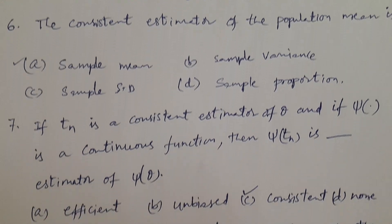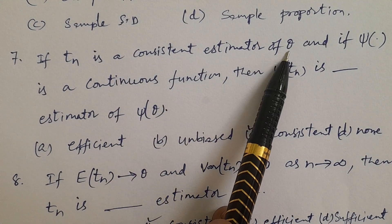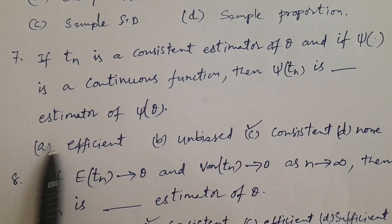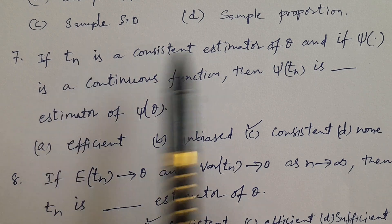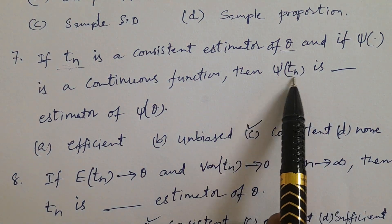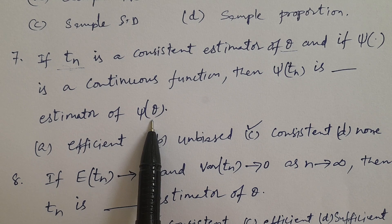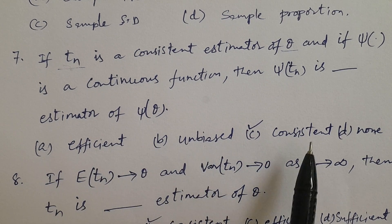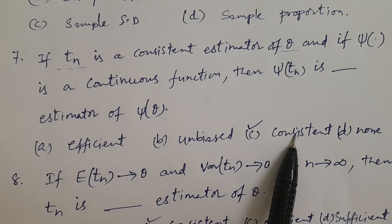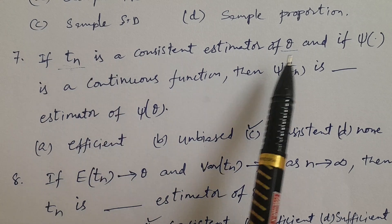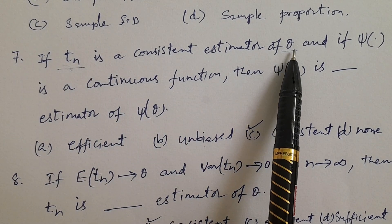Question number seven: If Tn is a consistent estimator of θ, and if ψ is a continuous function, then ψ(Tn) is a dash estimator of ψ(θ). Options: A. Efficient, B. Unbiased, C. Consistent, D. None. The answer is consistent — C. This is the invariance property of consistent estimator: if Tn is consistent for θ, then any function of Tn is also consistent for the same function of θ.